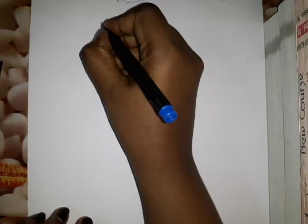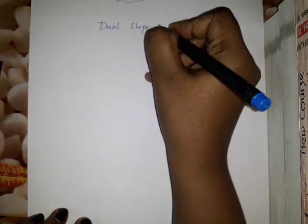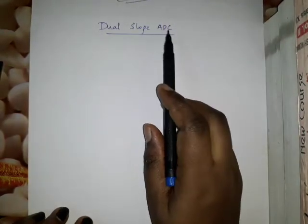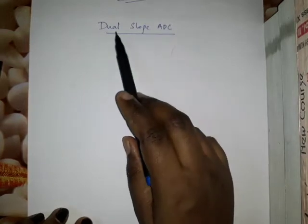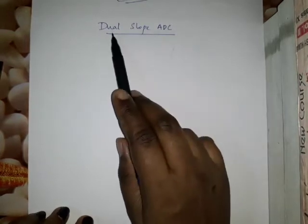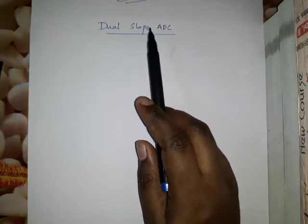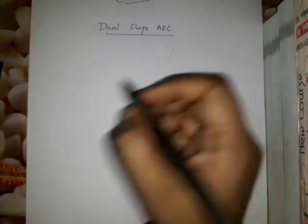Hi all, in this class we are going to study about dual slope ADC. ADC is an analog to digital converter — we take an analog signal and convert it into a digital signal. In an earlier video we have seen how the single slope ADC works, and now we are going to discuss how the dual slope ADC works.